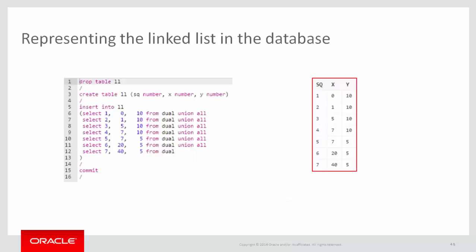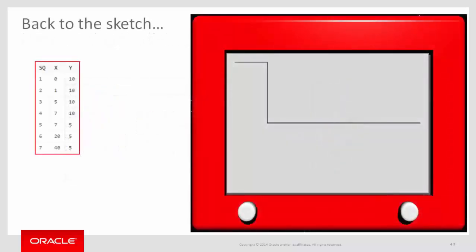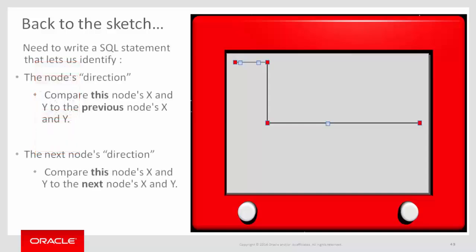Here's the SQL to create that in the database. Going back to the sketch, I've got the nodes in the database — x, y, and sequence number of each — highlighted in red are the nodes I want to keep. Once again, I need to write a SQL statement that identifies the node's direction and the next node's direction, comparing this node's x and y to the previous and next node's x and y.